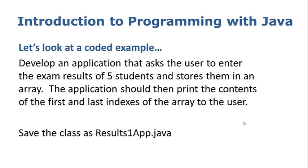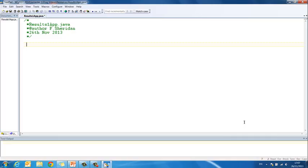Let's take a look at a coded example. We are asked to develop an application that asks the user to enter the exam results of 5 students and store them in an array. The application should then print the contents of the first and last indexes of the array to the user. We are going to tackle this in TextPad using an app class rather than an instantiable class, just so we can clearly see how arrays work.